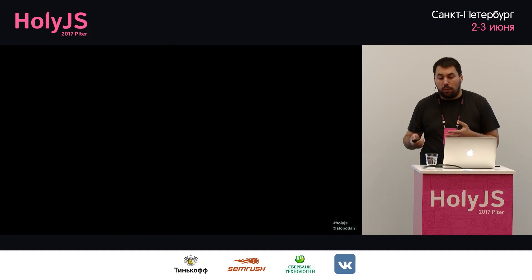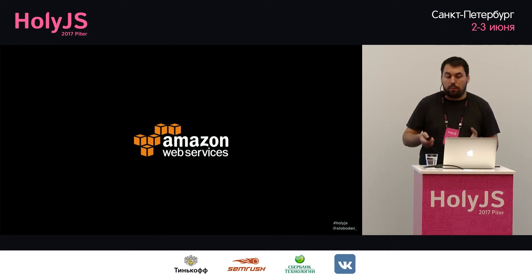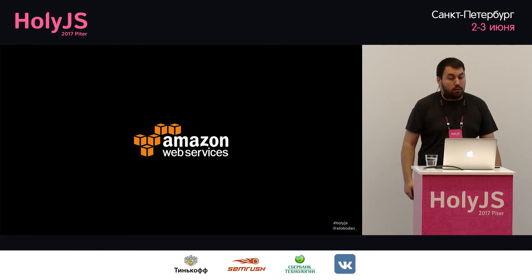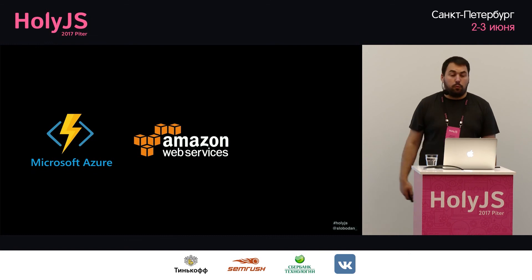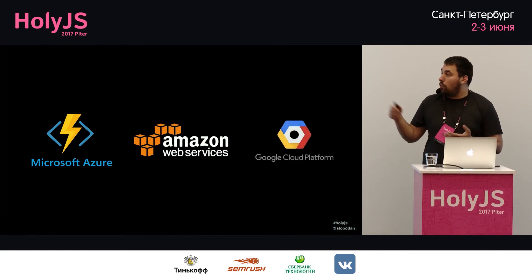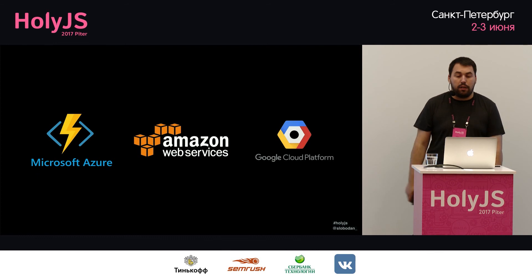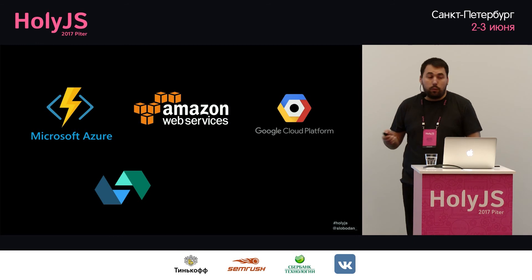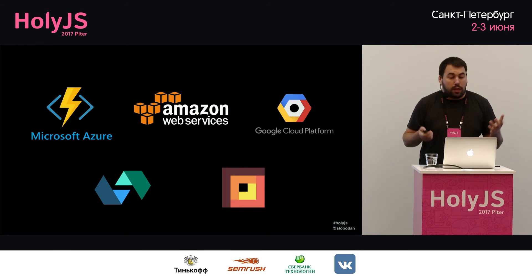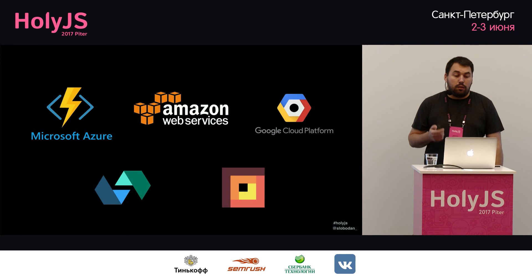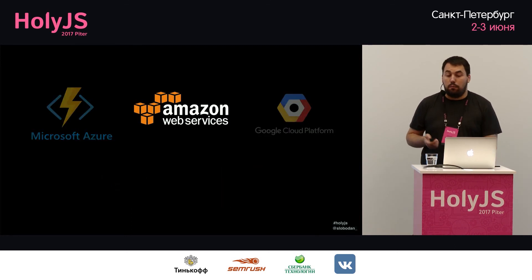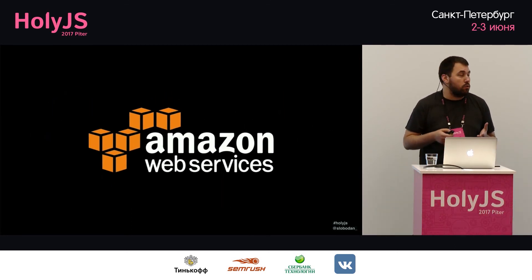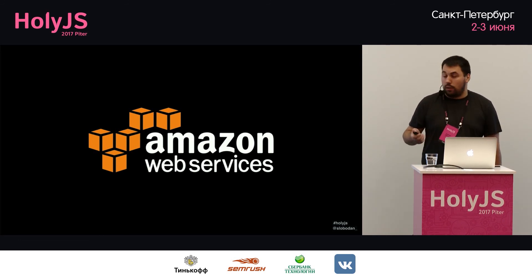Let's talk about platforms. Amazon was first with AWS Lambda. Then Microsoft followed with Azure Functions. Then Google Cloud with Google Cloud Functions. Now there are also IBM OpenWhisk, Webtask, and others. For me the most important is Amazon — I use it most and find it most reliable — but you can try others and it should work the same way.